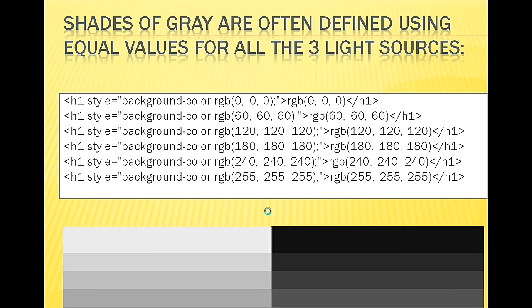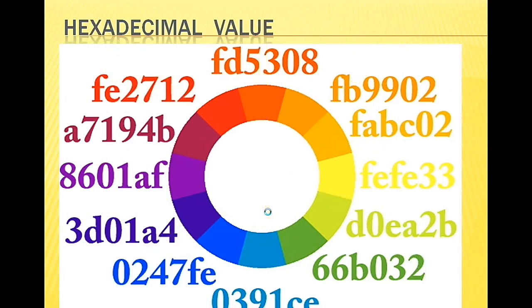These RGB values give different gray shades. Next, hex values - these are also available online. You can find hex values online as well.